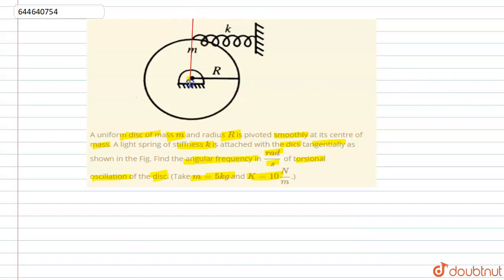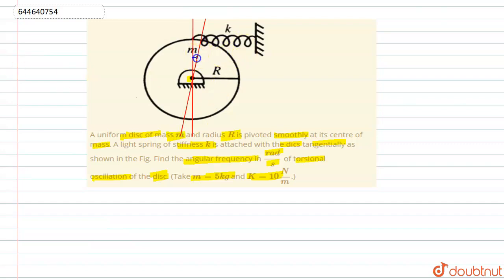The spring is attached tangentially along this axis. Currently the disk is in equilibrium. If we disturb the equilibrium position of this disc by a small angle delta theta, the spring compresses by a distance delta l. Due to this compression, the spring exerts a force delta f on the disc.